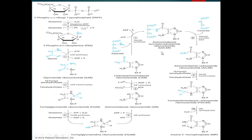After the formation of SAICAR or aminoimidazole succinylcarboxamide ribonucleotide, it is then converted into AICAR or aminoimidazole carboxamide ribonucleotide, with the release of a fumarate molecule and in the presence of the enzyme adenylosuccinate lyase.